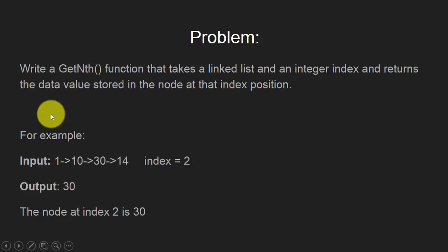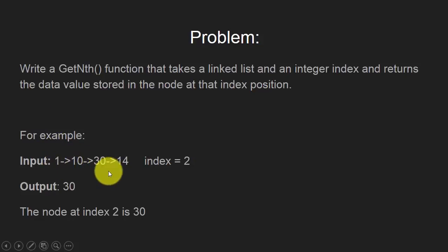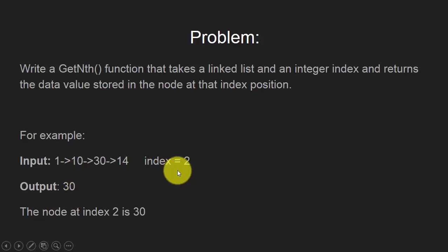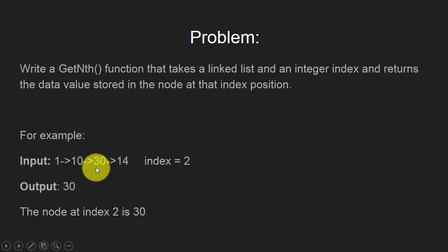For example, if the input linked list is 1, 10, 30, 14 and the index is 2, then the output will be 30. That is the node at index 2, counting from 0, 1, and 2. So the node at index 2 is 30.